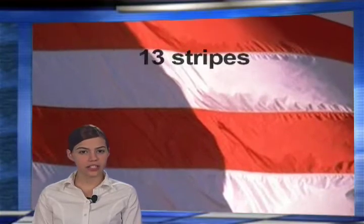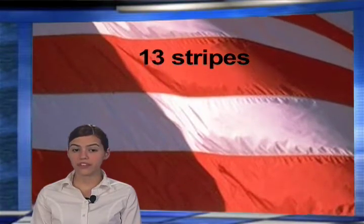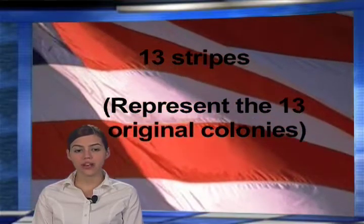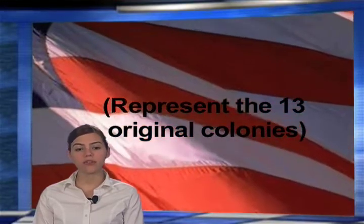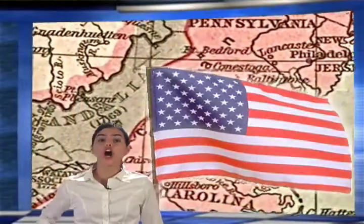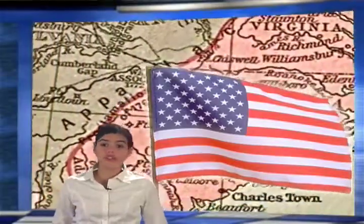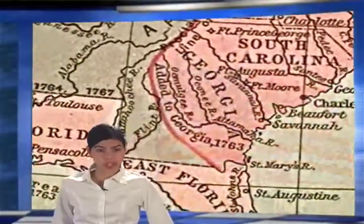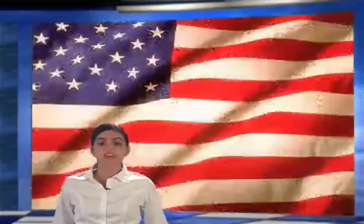The United States flag has 13 stripes. The stripes of the flag are red and white. The 13 stripes represent the 13 original colonies. Congress decided that the number of stripes on the flag should always be 13, to honor the original states no matter how many new states would join the United States later.